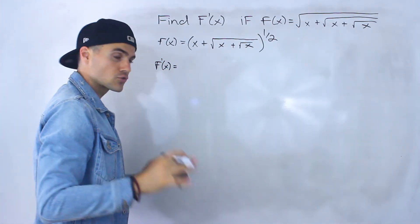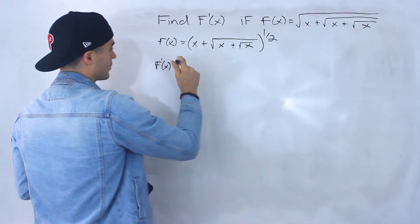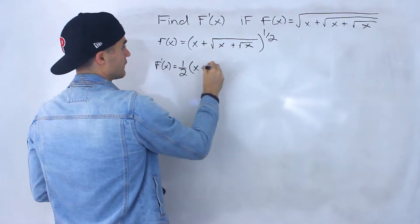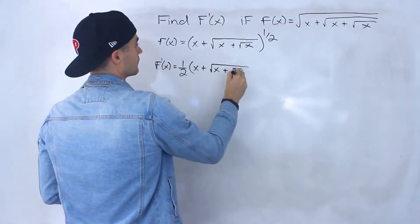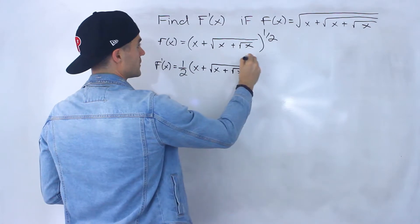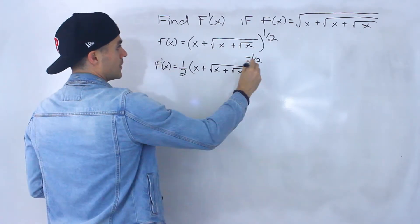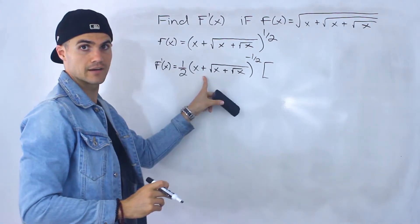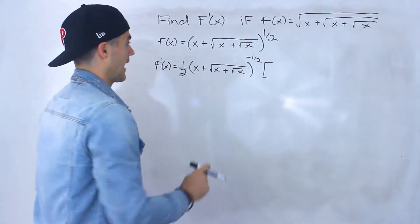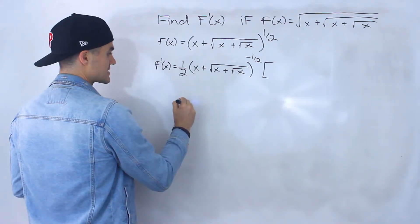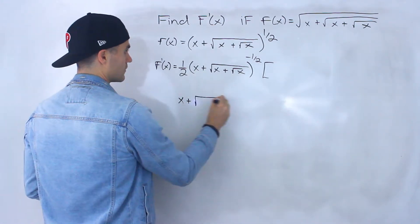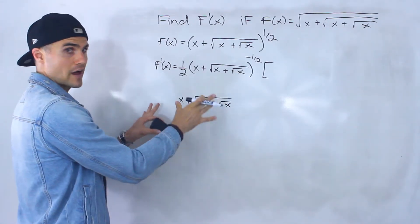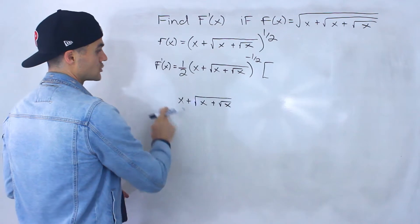So we take the derivative of the outside — we bring the one half down. The inside function stays the same. We subtract one from the exponent. But now we've got to multiply by the derivative of the inside function. So what I'm going to do is rewrite that inside function here so we can see it a little more clearly, isolated by itself.